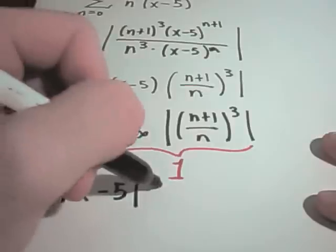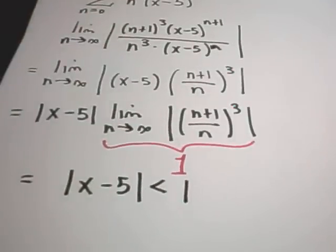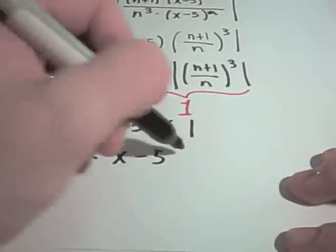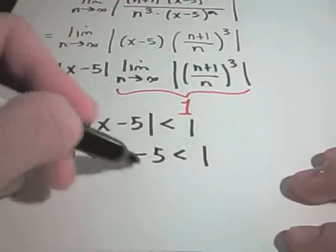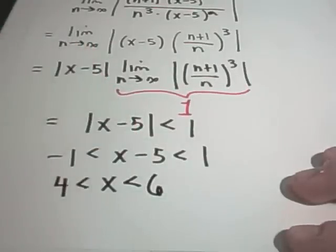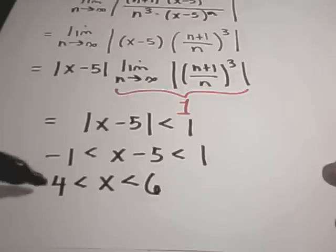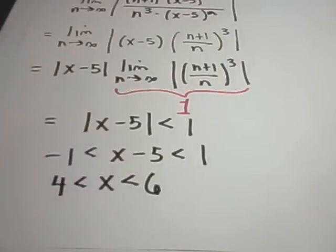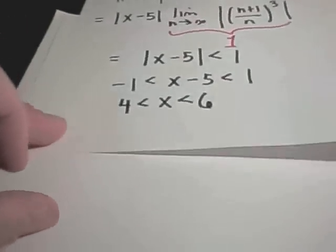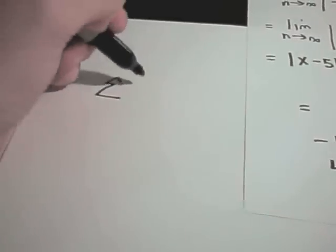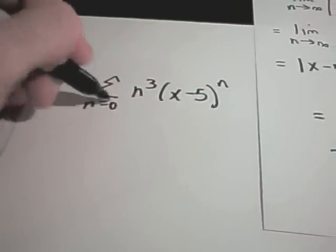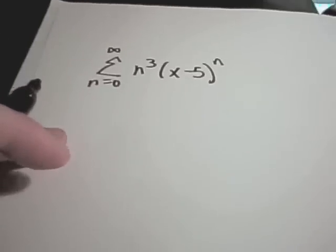Solving the absolute value of x minus 5 less than 1: I put x minus 5 between negative 1 and positive 1. Adding 5 to all sides gives x between 4 and 6. So any number strictly between 4 and 6 makes the series converge. Now I have to check the endpoints separately. The original series is the sum from n equals 0 to infinity of n cubed times x minus 5 to the n.